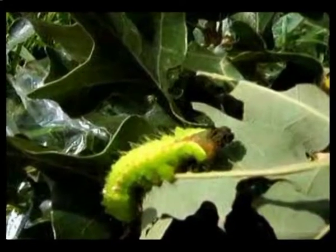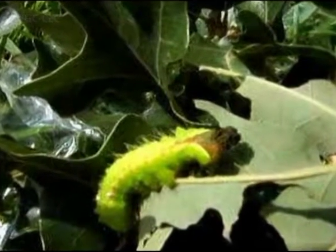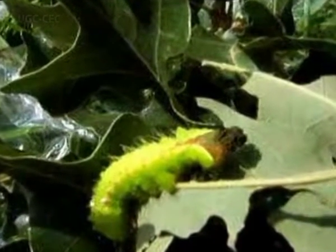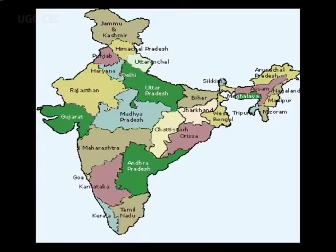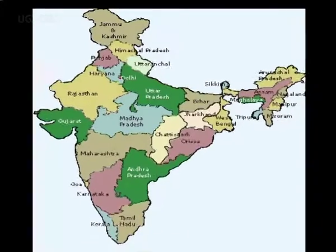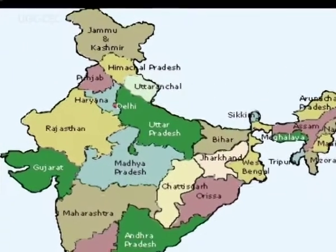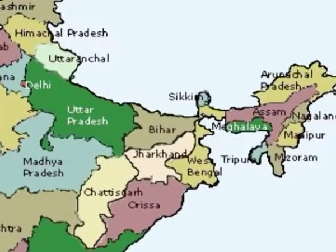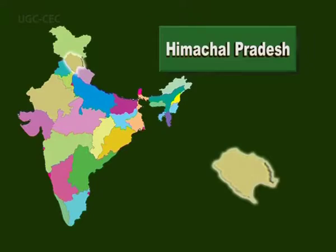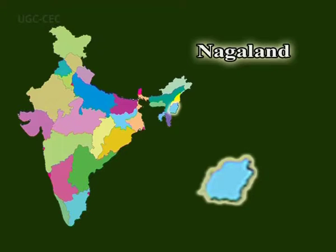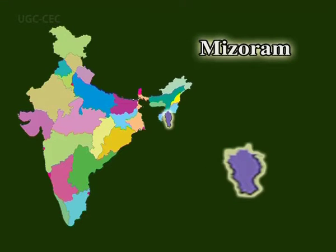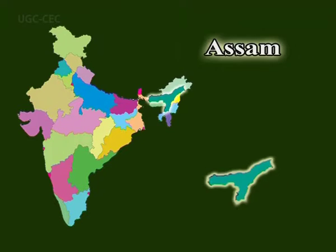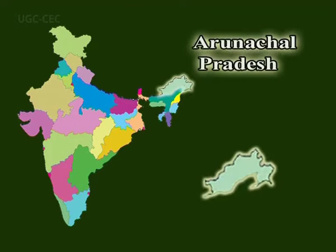Coming to Antheraea proylei — the Temperate Tusser Silkworm. Antheraea proylei is distributed in temperate places like the sub-Himalayan belt of India, from Jammu and Kashmir and the North West to Manipur in the North East, comprising Himachal Pradesh, Uttar Pradesh, Nagaland, Mizoram, Meghalaya, Assam, and Arunachal Pradesh.